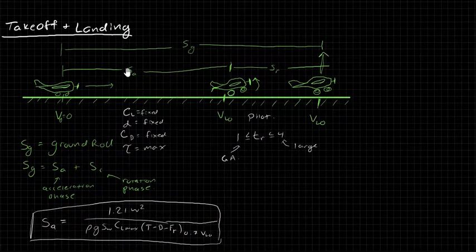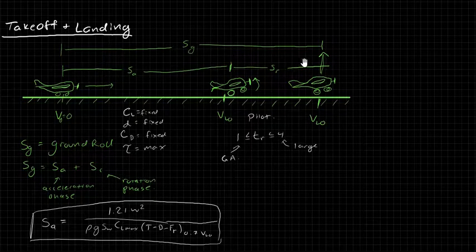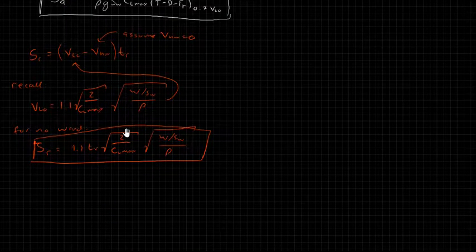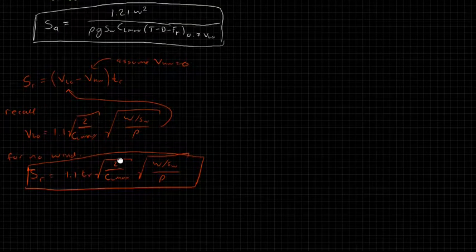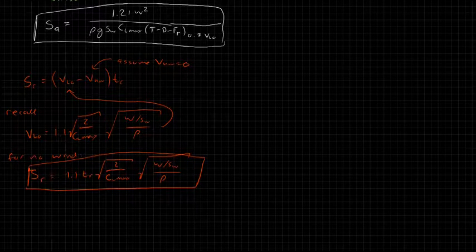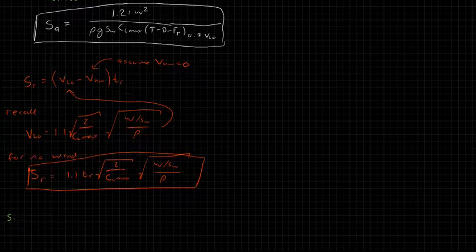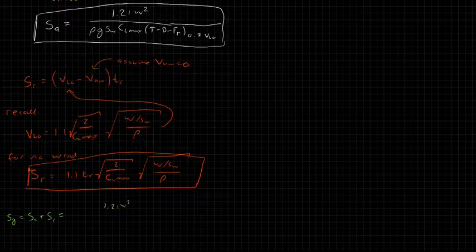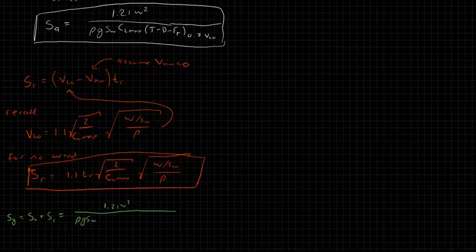So now if we go up, we have our acceleration distance, we have our rotation distance, and so the ground roll is just the sum of the two. So we're going to then say that SG equals SA plus SR, which equals 1.21 W squared divided by rho G SW CL max times T minus D minus FR, all evaluated at 70% of the liftoff speed.